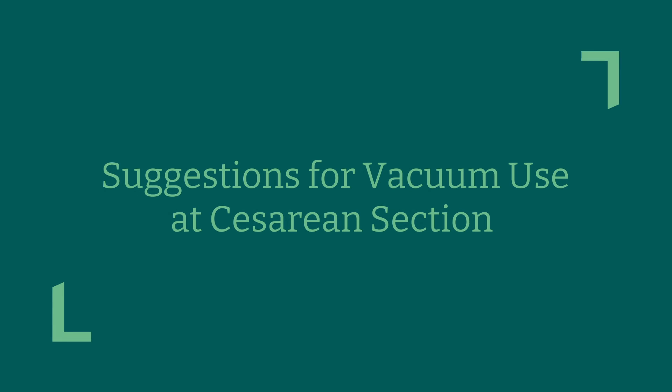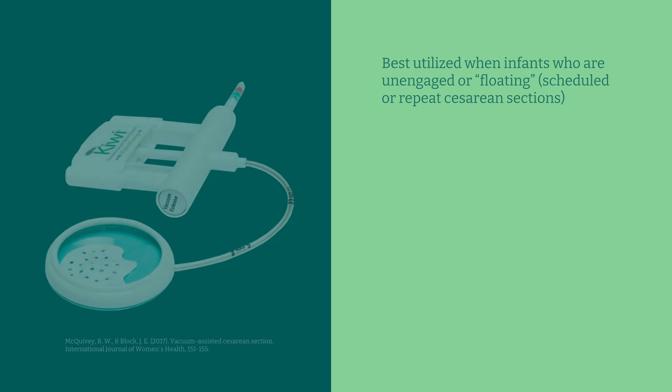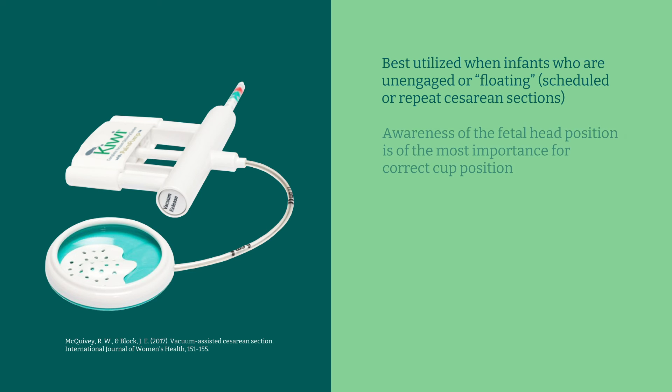The following are the suggestions for vacuum use at cesarean section: best utilized when infants are unengaged or floating, scheduled or repeat cesarean sections. Awareness of the fetal head position is of most importance for correct cup position. Placed over the flexion point 3 cm anterior to the posterior fontanelle along the sagittal suture.